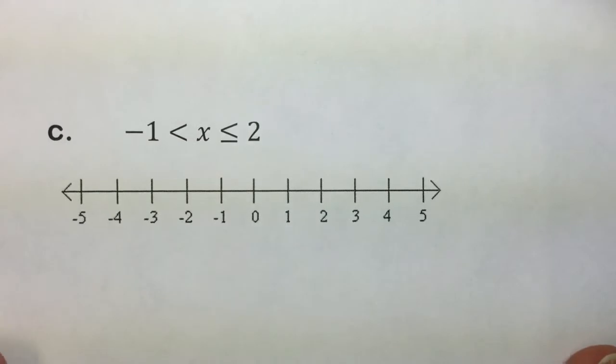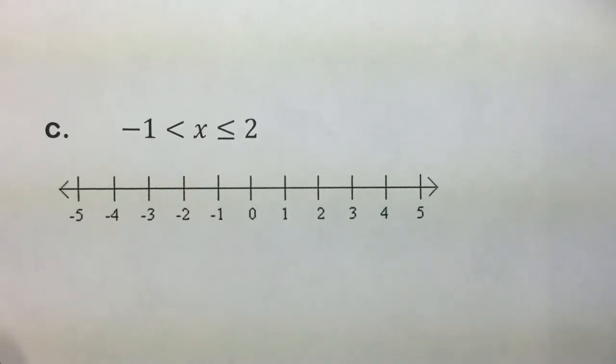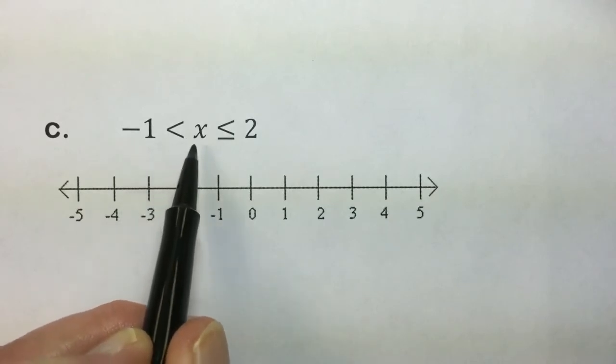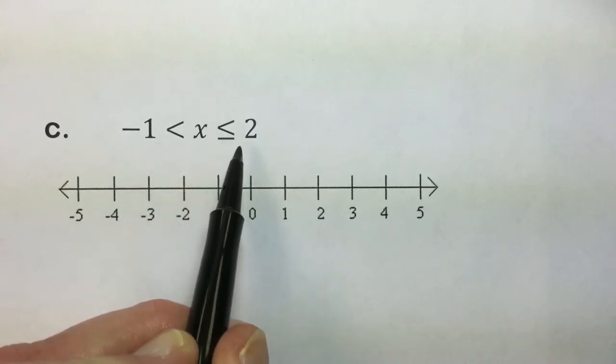In this next example, we will first graph to see the set of solutions to this inequality. We want x values that are greater than negative 1 and at the same time less than or equal to 2.